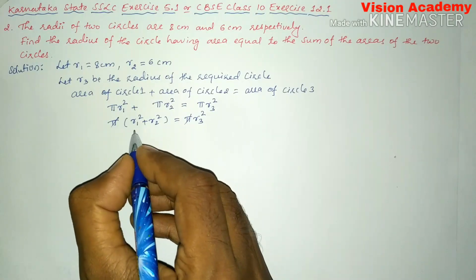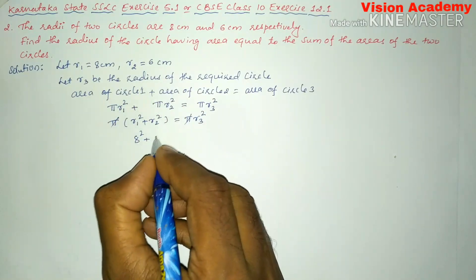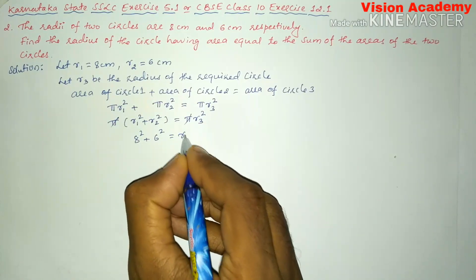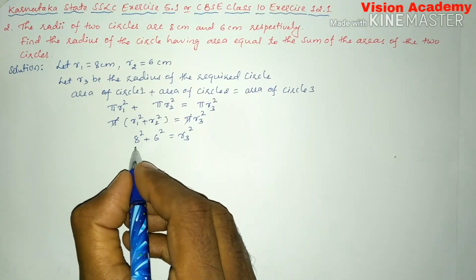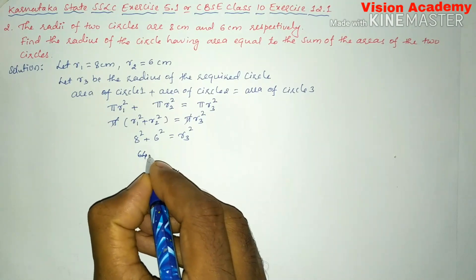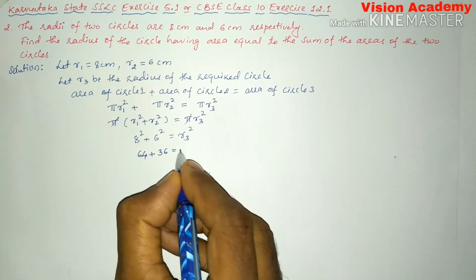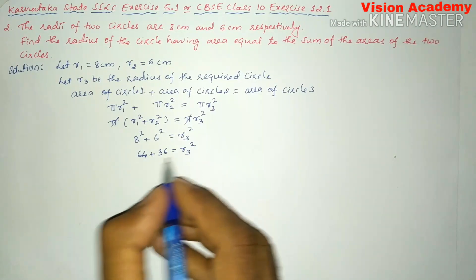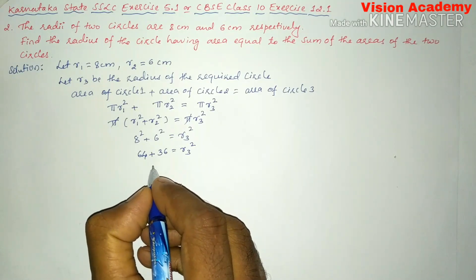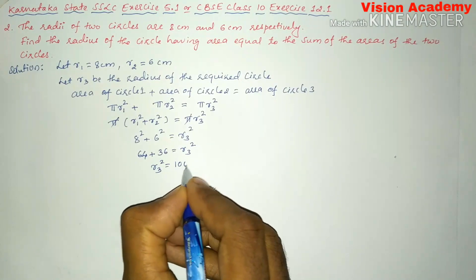r1 square is 8 square plus r2 square is 6 square equals r3 square. Here 8 square is 64 plus 6 square is 36 equals r3 square. 64 plus 36 gives us r3 square equals 100.